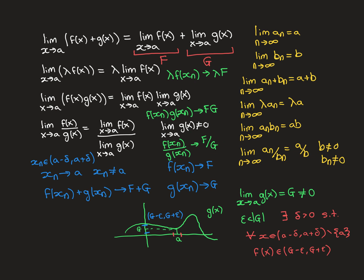The exact analogous arguments using the results of the algebra of limits of sequences can be used to show that these results hold true for limits as x approaches infinity or x approaches negative infinity.